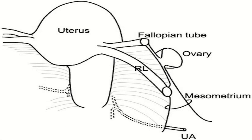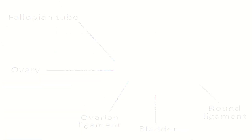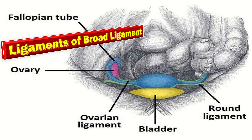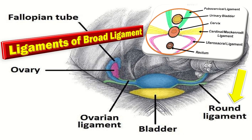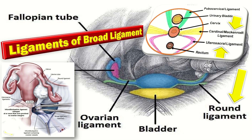The broad ligament consists of anterior and posterior leaflets of peritoneum, which covers the lateral uterine corpus and upper cervix, and extends from the lateral wall of the uterus to the pelvic side walls. It is bounded superiorly by the round ligament, inferiorly by the cardinal and utero-sacral ligaments, and laterally by the infundibulopelvic ligament where it joins the pelvic side wall.